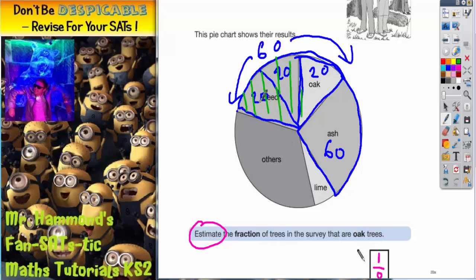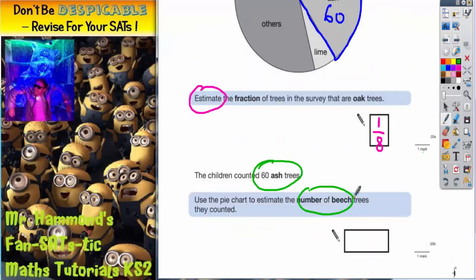Because the total for beech is going to be this 20 and this 20. So I would estimate that the total of the beech is going to be 20 plus 20 which is going to be 40. And that's what I'm going to put in for my estimate. Again it is only an estimate and they may give you some leeway in the mark scheme but it's a good estimate for the number of beech trees, 40.